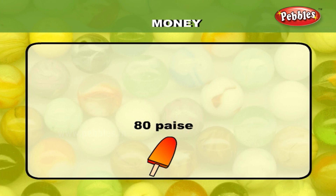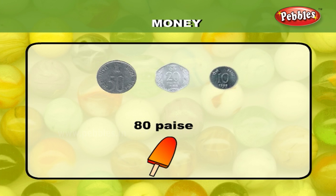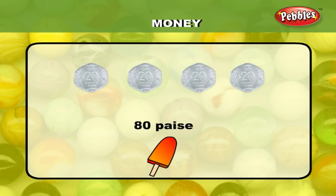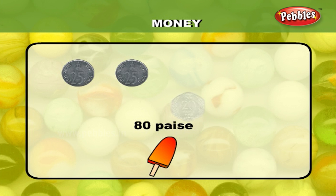In the same way, when you need to buy an ice cream worth 80 paise, we can use one 50 paise coin, one 20 paise coin and one 10 paise coin which equals 80 paise, or four 20 paise coins which is also equal to 80 paise, or two 25 paise coins, one 20 paise coin and one 10 paise coin.